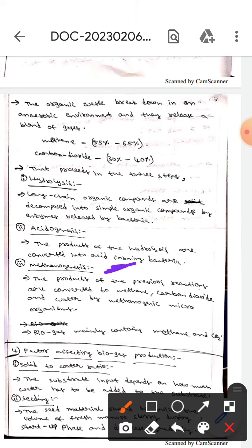The next one is methanogenesis. Here, the products of the previous reactions are converted to methane, carbon dioxide, and water by methanogenic microorganisms.